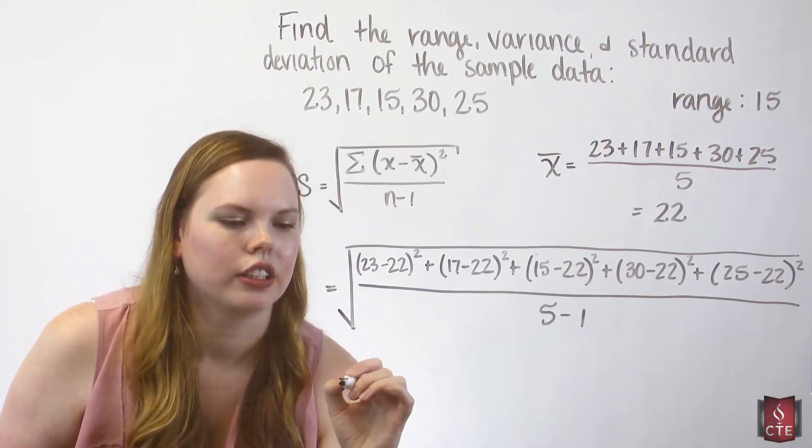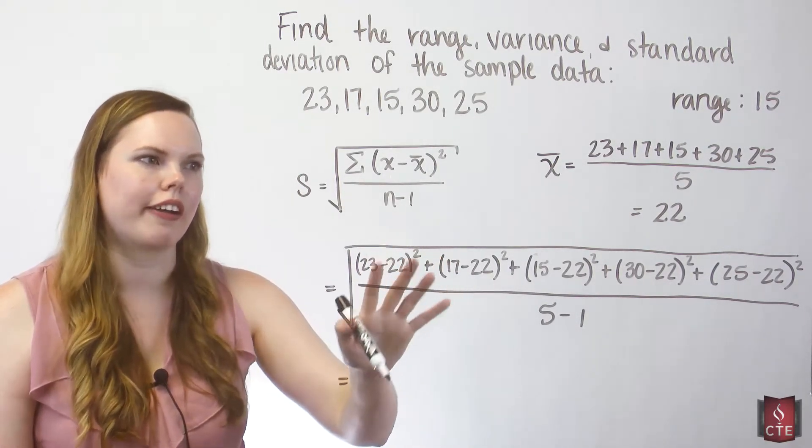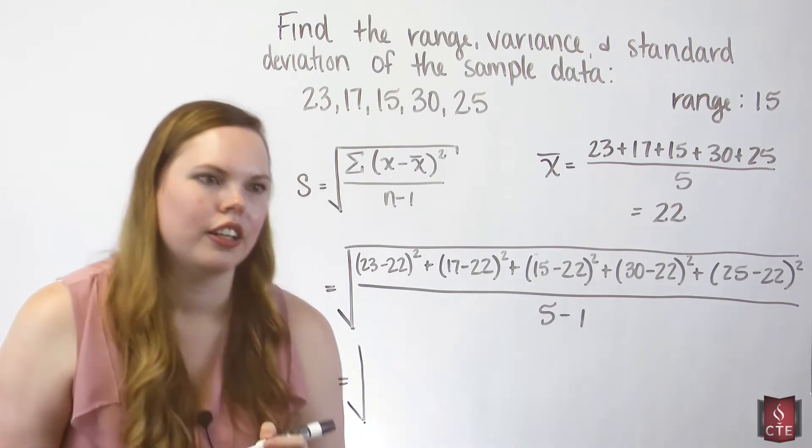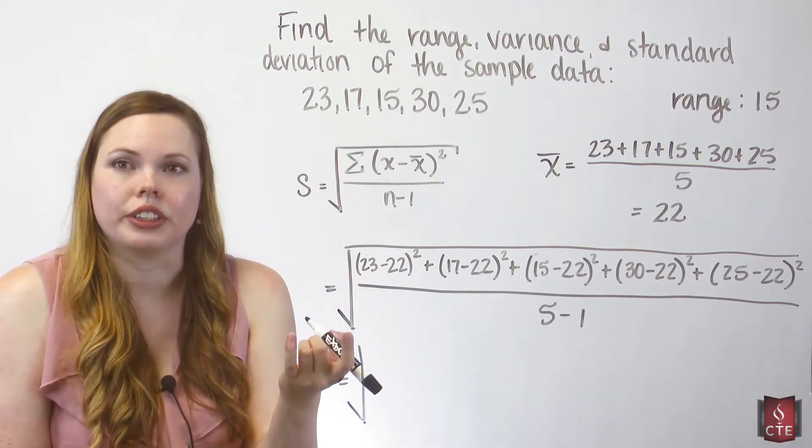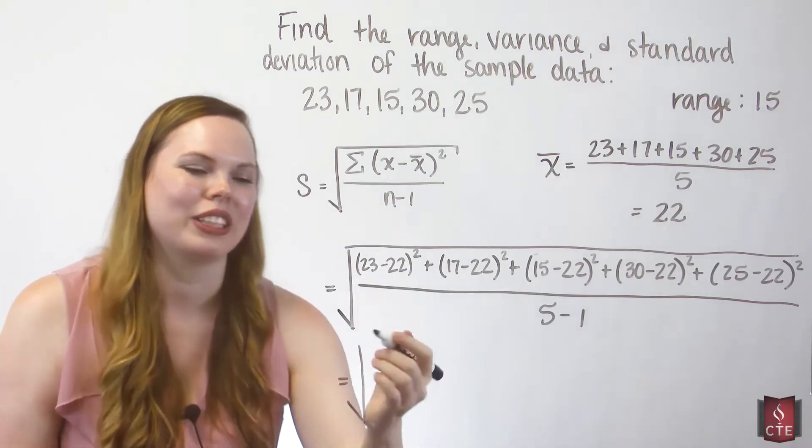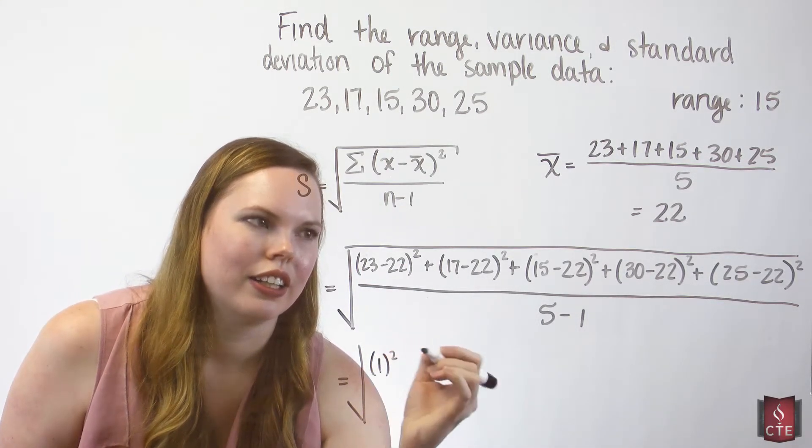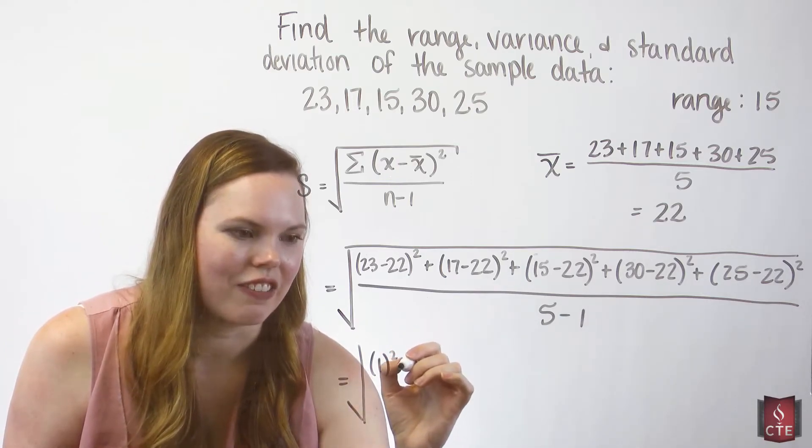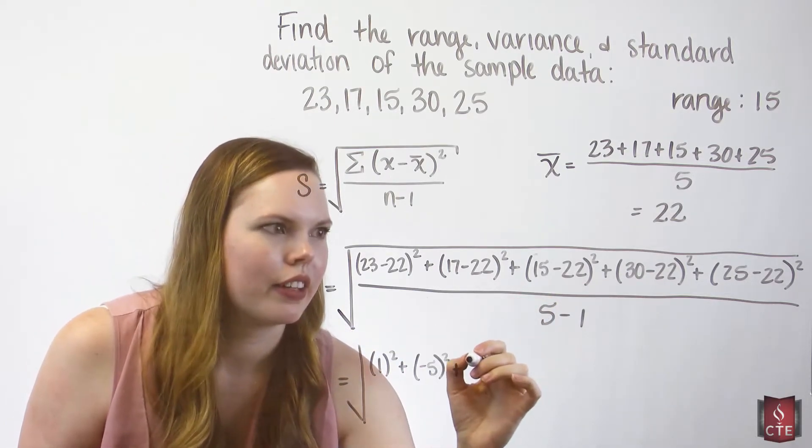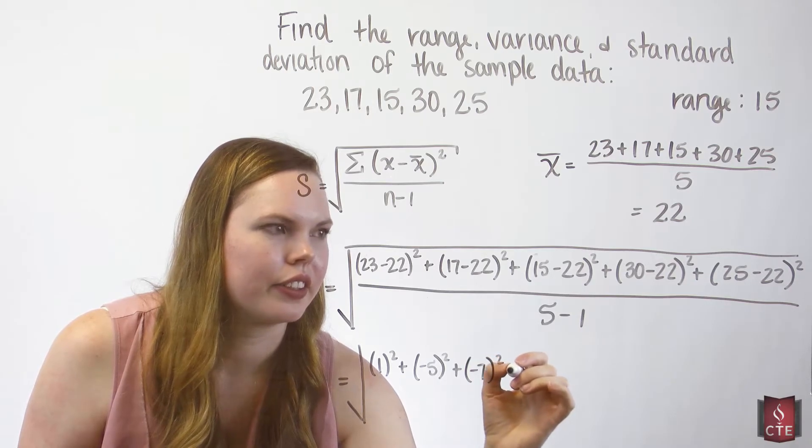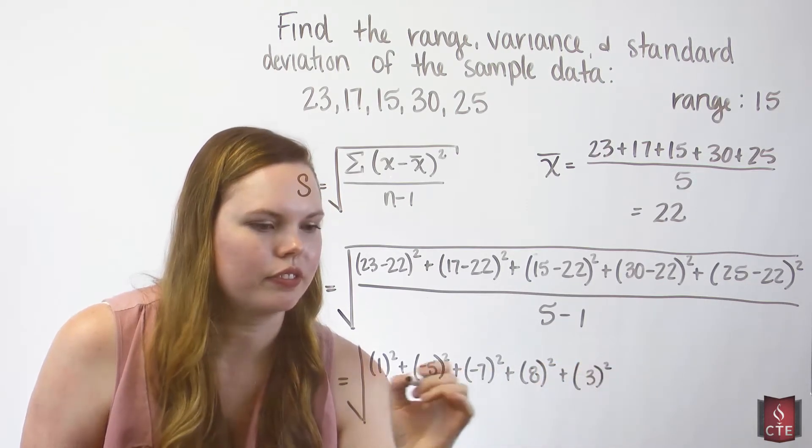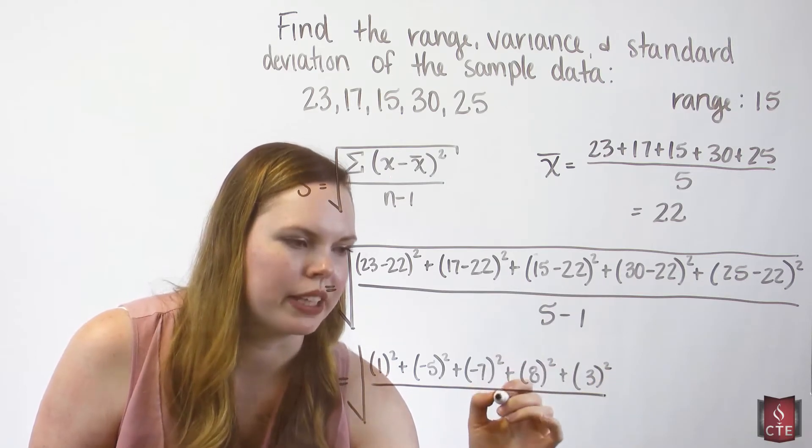So I'm going to do some intermediate steps so you can see it. You can plug all this in your calculator and find it, but I want you to see some intermediate steps here. Go ahead and do the subtraction first because if we were doing order of operations, we would do the subtraction first because it's in parentheses, and then we would do the squaring. So 23 minus 22 is 1. 17 minus 22 is negative 5. These are all the deviations from the mean, the distance between that data point and the mean. Negative 7, 8, and 3. We'll go ahead and do the 5 minus 1. Of course, that's 4.